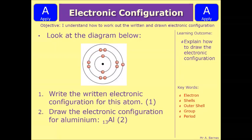Okay, let's have a look at a couple of questions then. So the first question here shows you a diagram of an element and asks you to write the written electronic configuration for the atom. It's only worth one mark, so you know you don't have to do too much for that one.